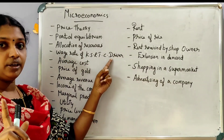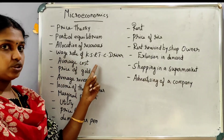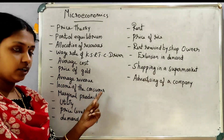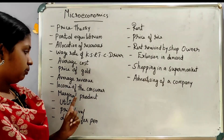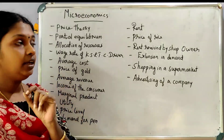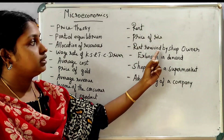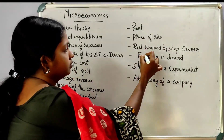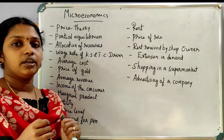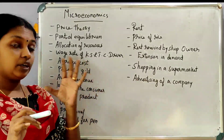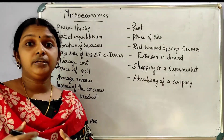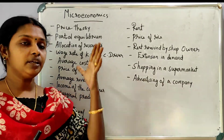Examples of MicroEconomics topics: KSRTC driver wage rate, average cost, price of gold, average revenue, income of the consumer, marginal product, utility, price level, demand for pen, demand rent, price of rice, rent received by shop owner, extension in demand, shopping in a supermarket, advertising of a company. These are products and topics repeated in MicroEconomics — partial equilibrium, price theory, utility, price level.